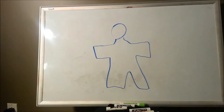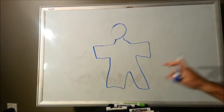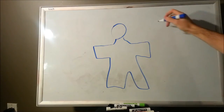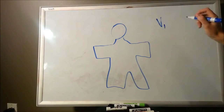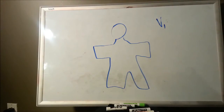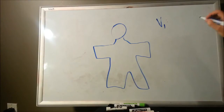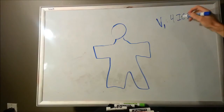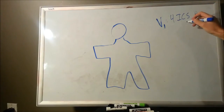These are called the precordial leads. Precordial means that they're surrounding the heart. These are harder to draw simply because they're formed by six different electrodes placed around the heart. The first one is precordial lead one, and that's going to be located in the fourth intercostal space on the right side parasternal.